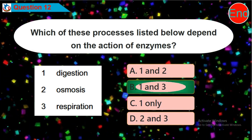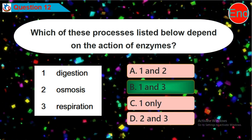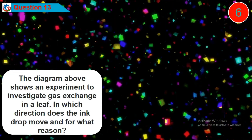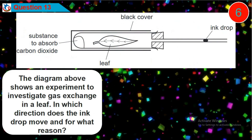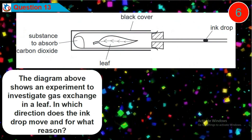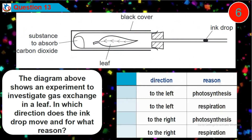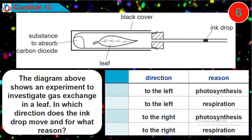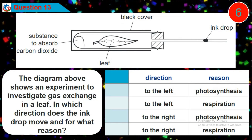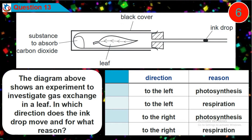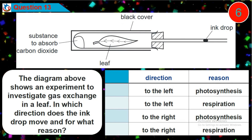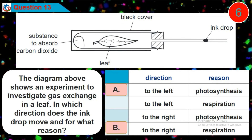Question 13: The diagram shows an experiment to investigate gas exchange in a leaf. In which direction does the ink drop move, and for what reason? Is it option A, B, C, or D?